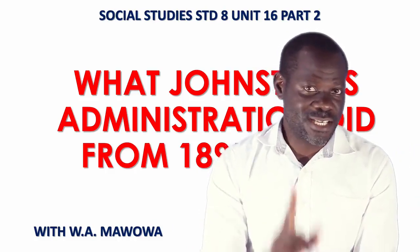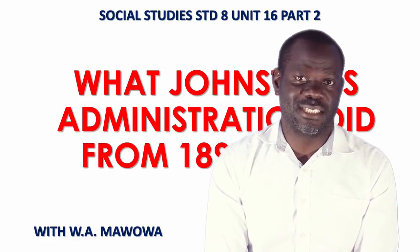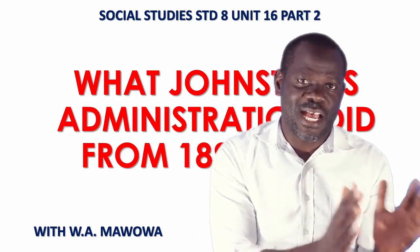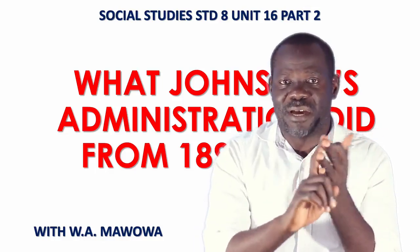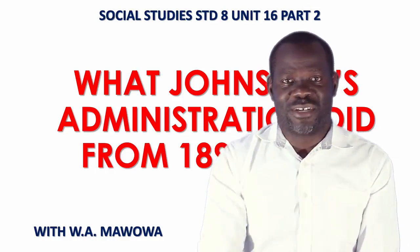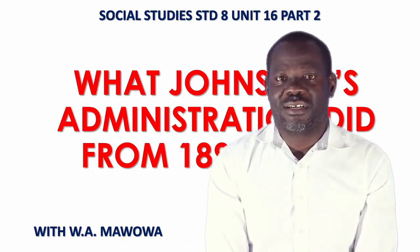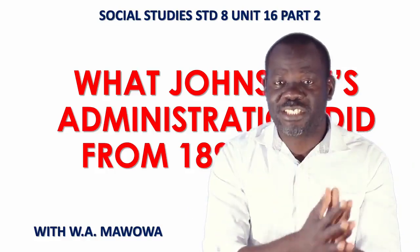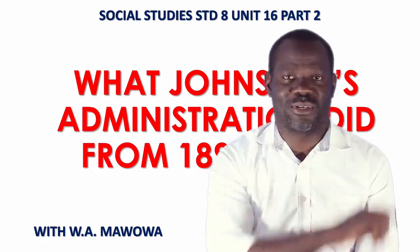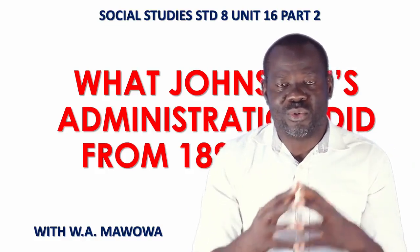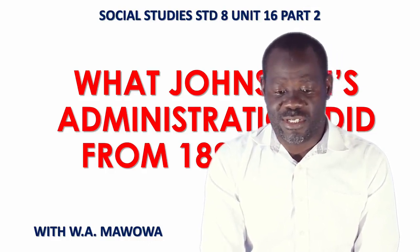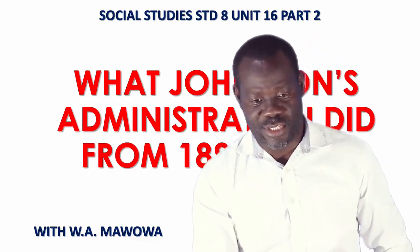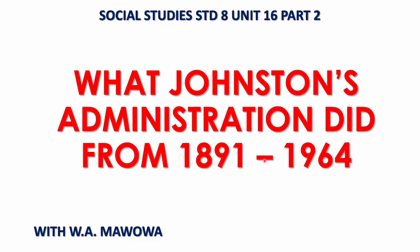Remember, last time we also mentioned that between 1953 and 1963, Malawi, Zambia and Zimbabwe were declared a federation of Rhodesia and Nyasaland. Now we are going to continue looking at the administration of the colonial government under Sir Harry Johnson, from 1891 to 1964.